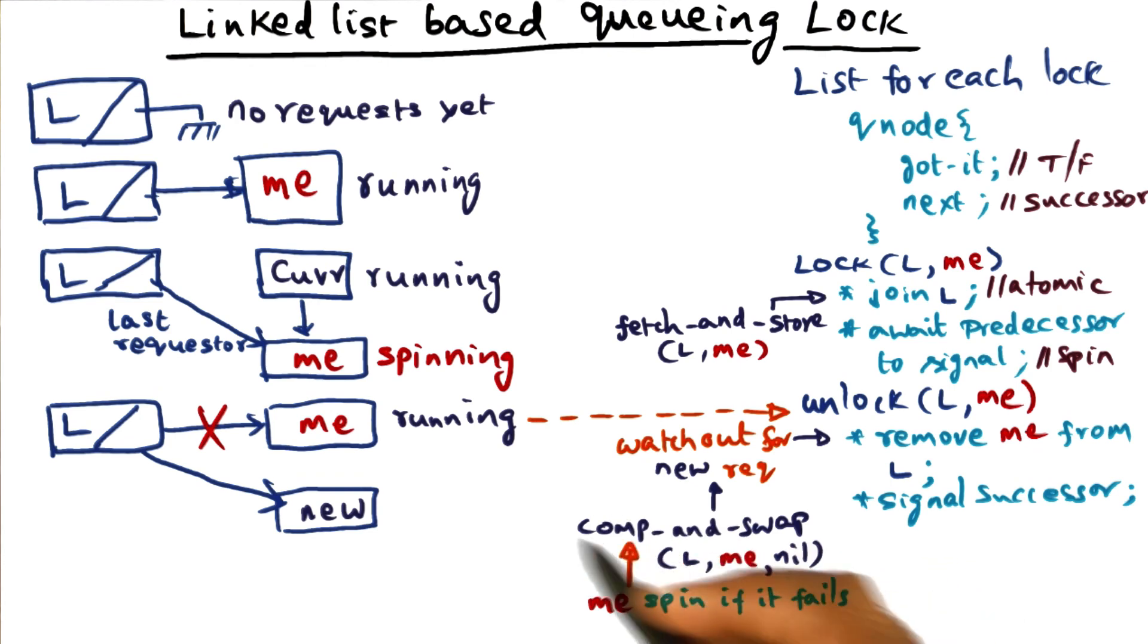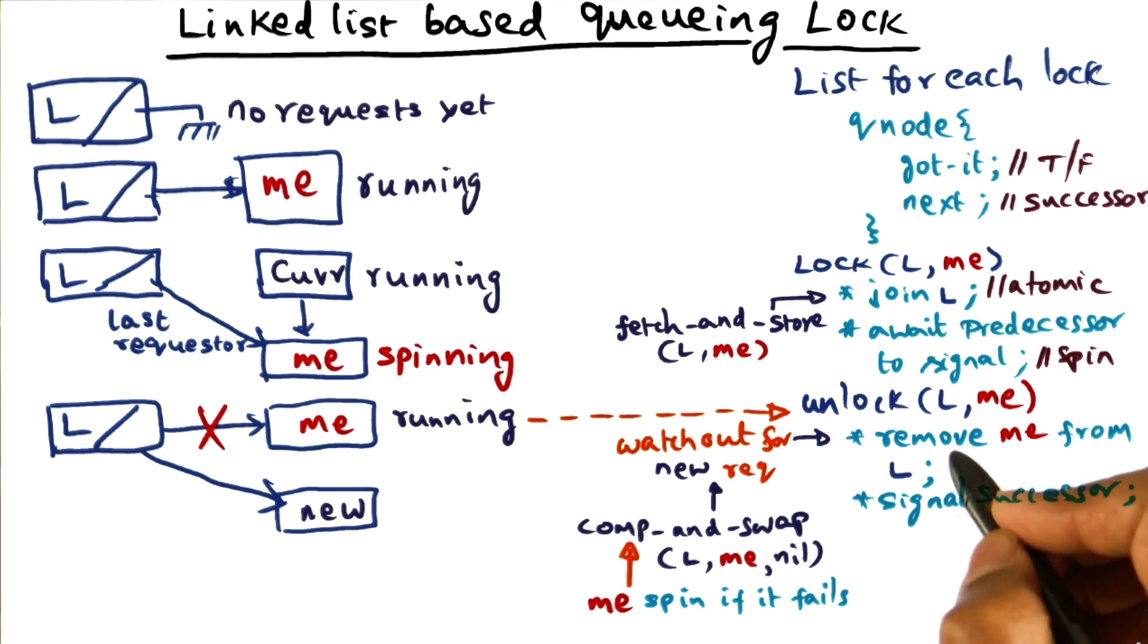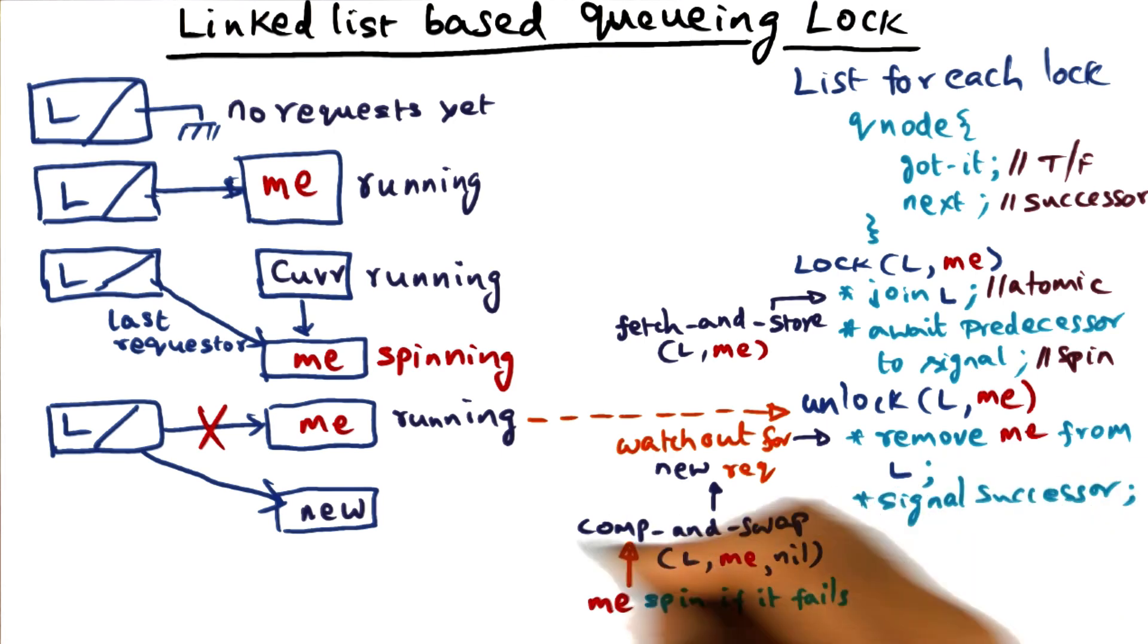And so the semantic of the unlock call is I come in, remove myself from L, and in order to do that, I'm going to do this compare-and-swap on the linked list. And if I find that the compare-and-swap instruction fails, I'm going to spin.